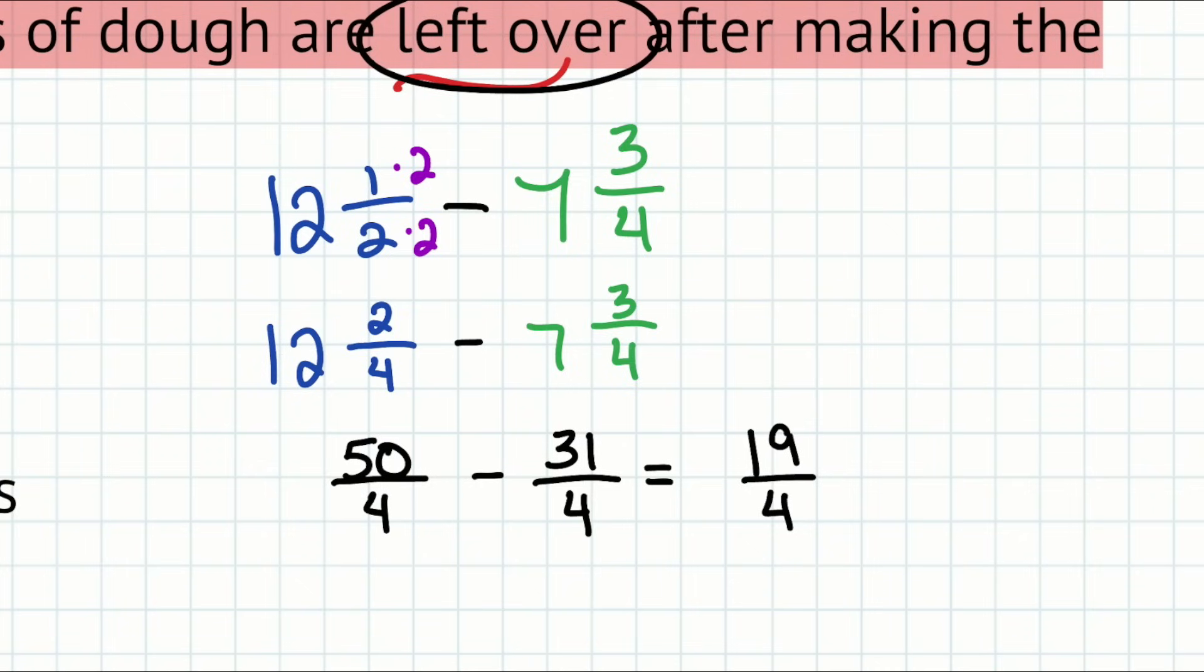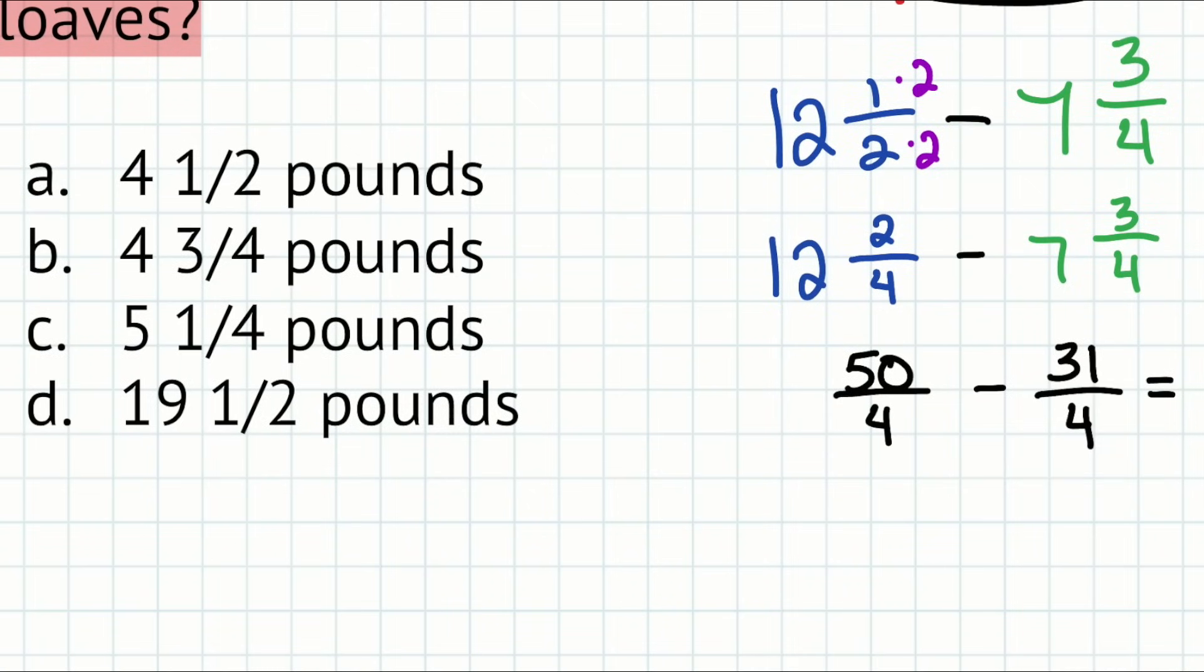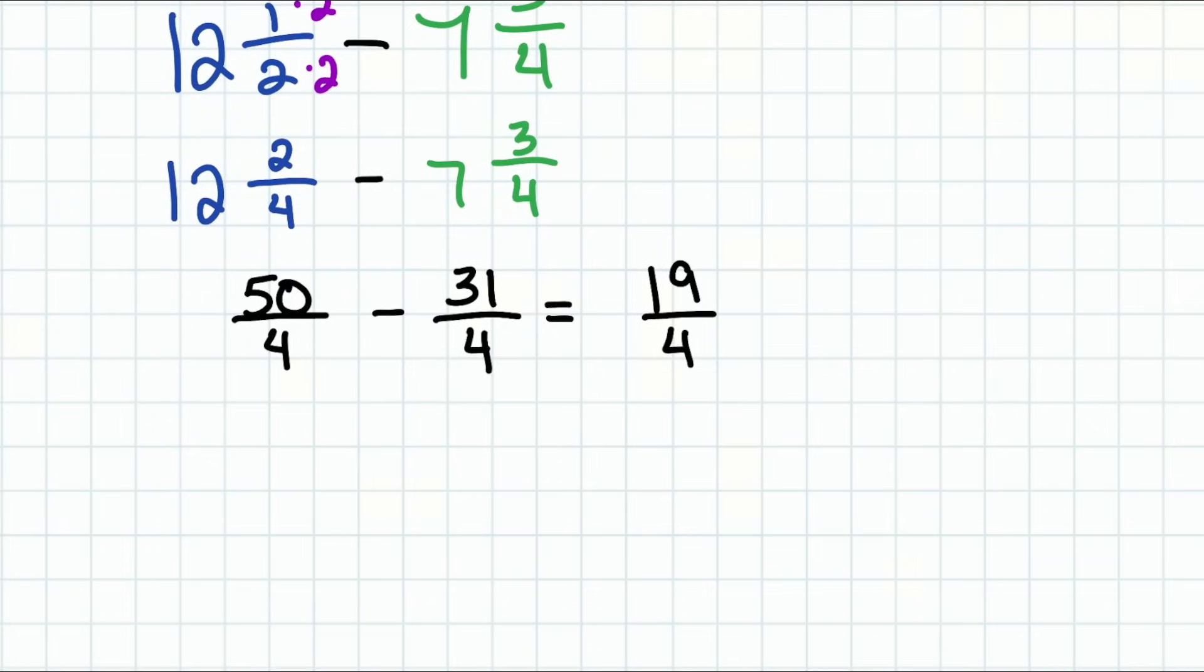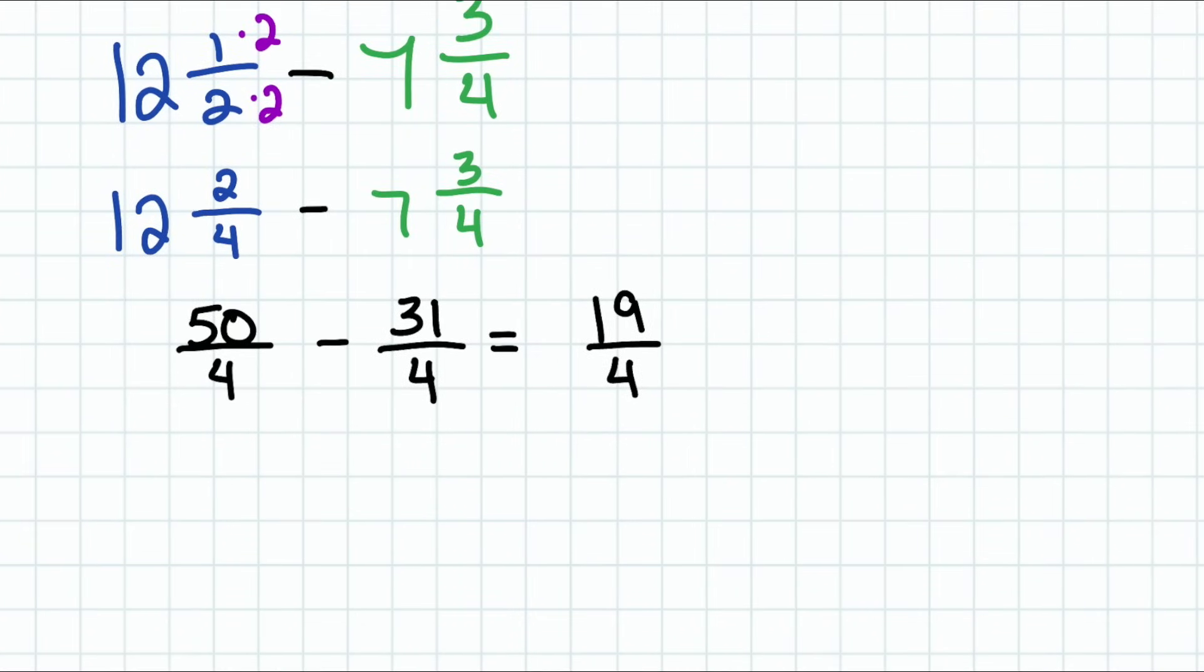So notice we're pretty good now. We can go ahead and subtract super simple. 50 minus 31, that'll be 19, and that's still going to be over four. Remember when you are subtracting or adding fractions, we will keep that denominator. And now the last thing we need to do, let's check the answer choices. Notice that we have mixed numbers, so we definitely need to turn this back into a mixed number.